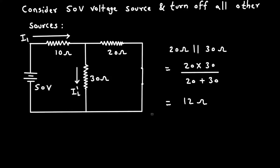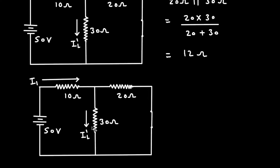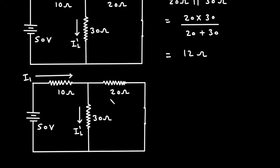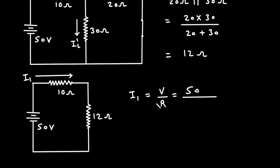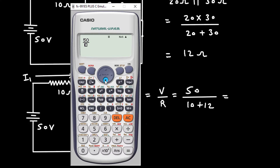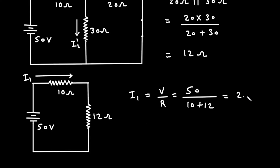We can replace these two resistors by a single resistance of 12 ohm. Now we can easily find the value of I_1. So I_1 equals V divided by R. The voltage is 50 volts and the resistance is 10 plus 12, so I_1 equals 50 divided by 10 plus 12, which is 2.27 ampere.